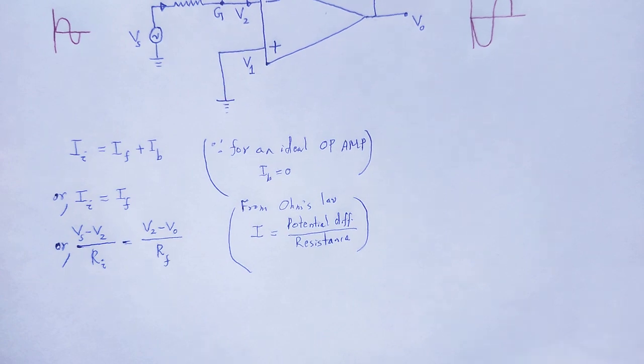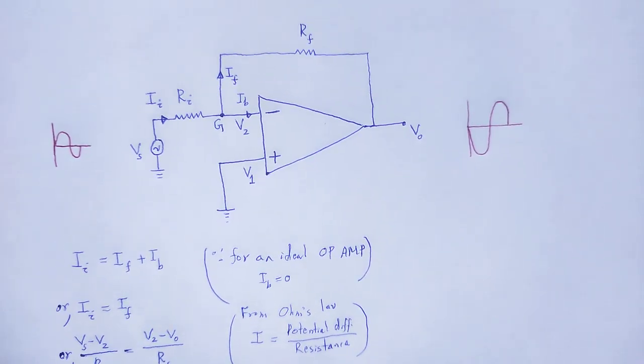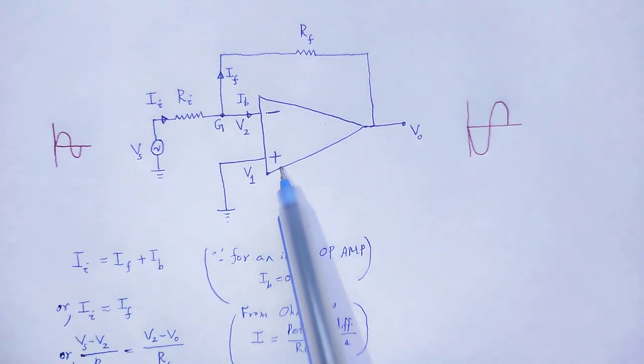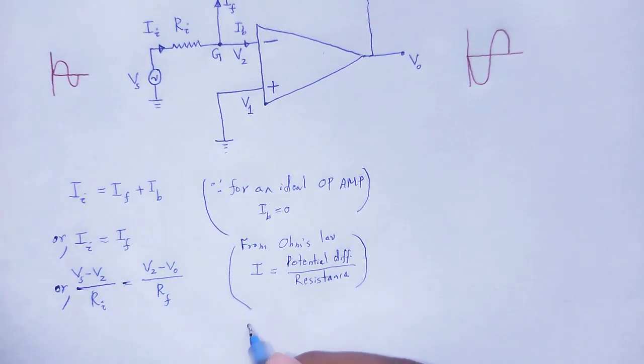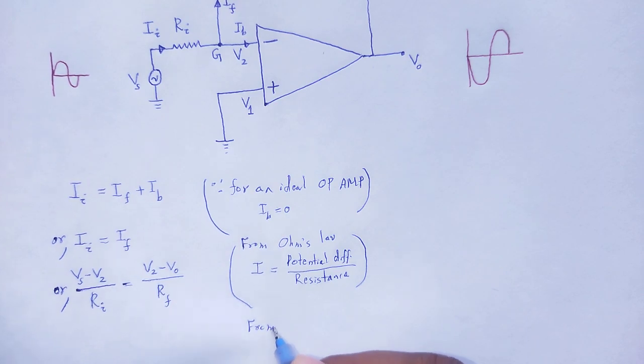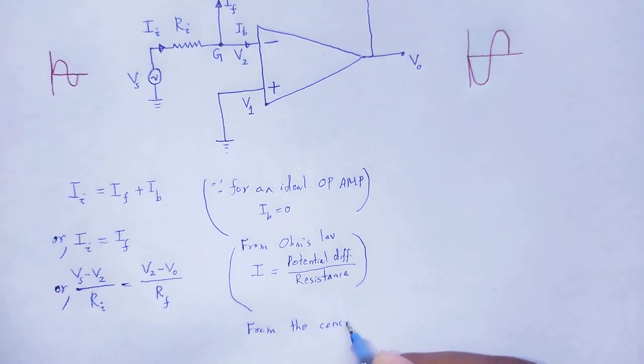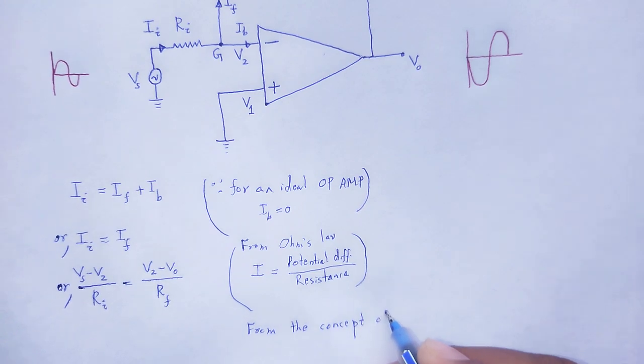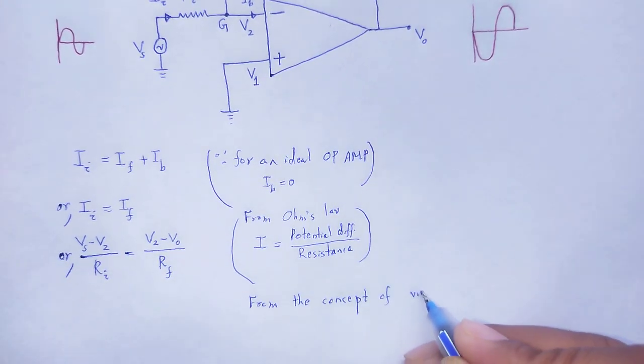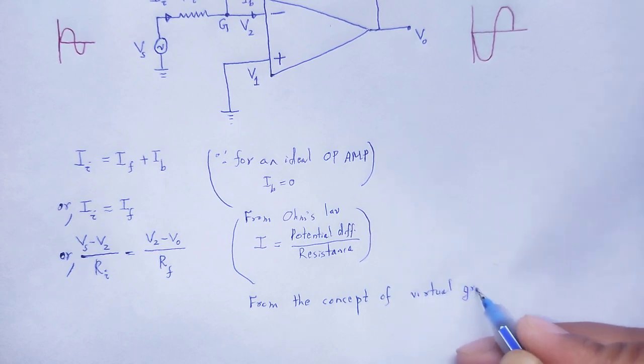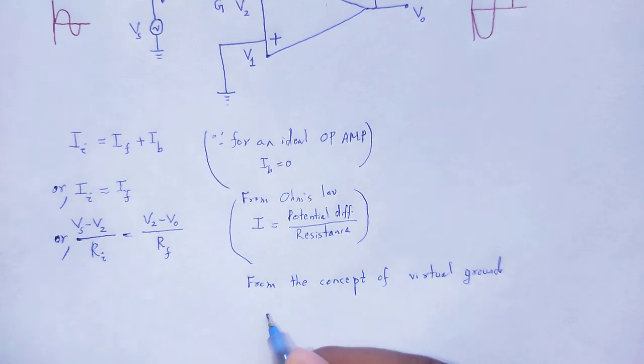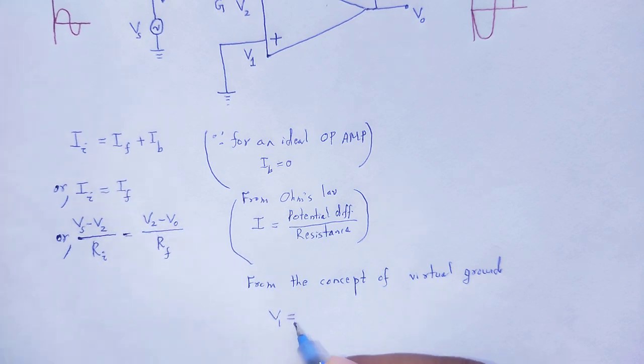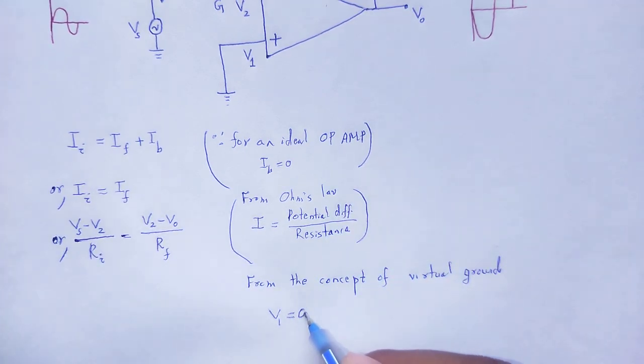From the concept of virtual ground, as that non-inverting terminal is grounded, from the concept of virtual ground, V1 is equal to zero.